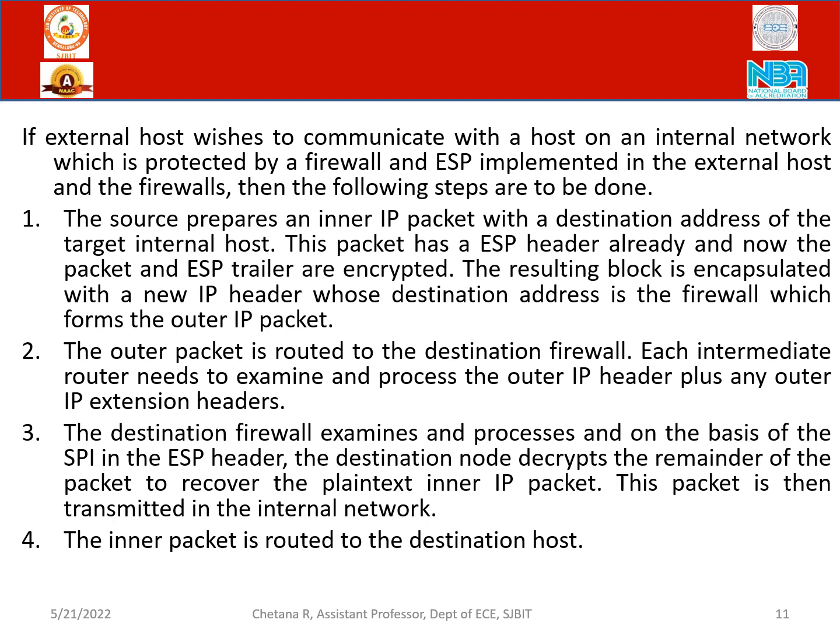The ESP header carries the SPI index indicating to which security association it belongs. Once the firewall sees that, it decrypts the remainder. It allows the packet because it is authenticated information. It decrypts and tries to recover the innermost IP packet, and then routes it to the destination host. Multiple layers are present — it is encapsulated — and whenever it reaches the firewalls, it is the header which is cross-checked.